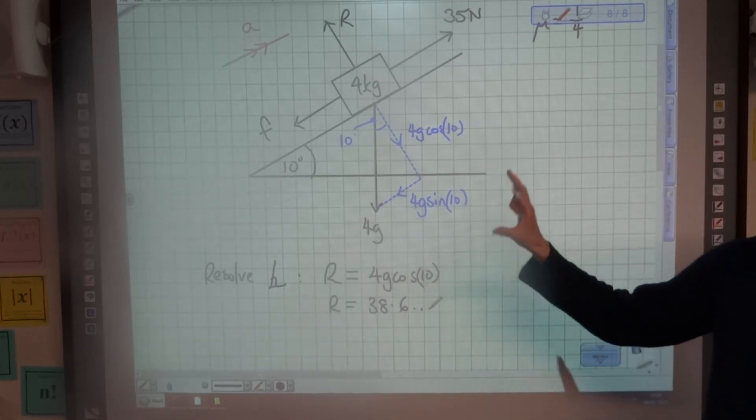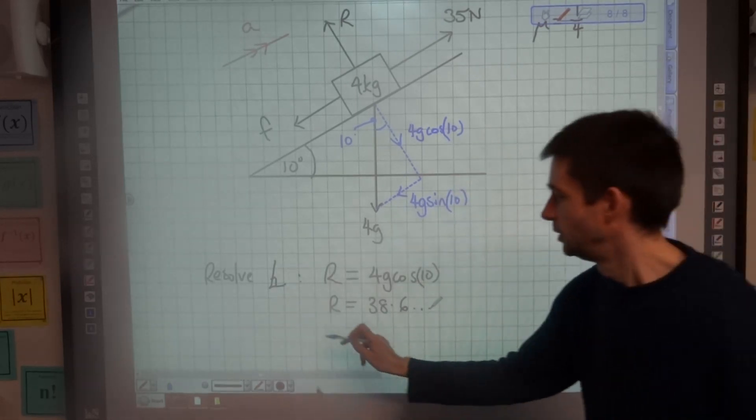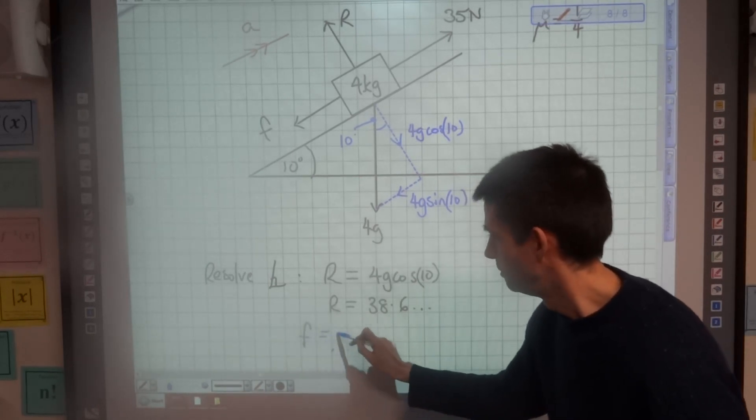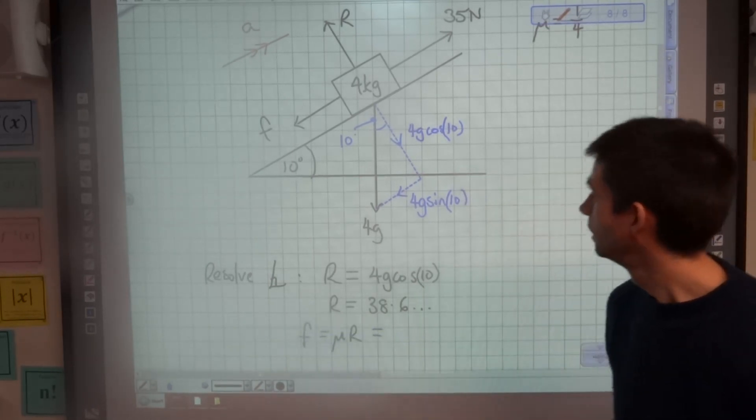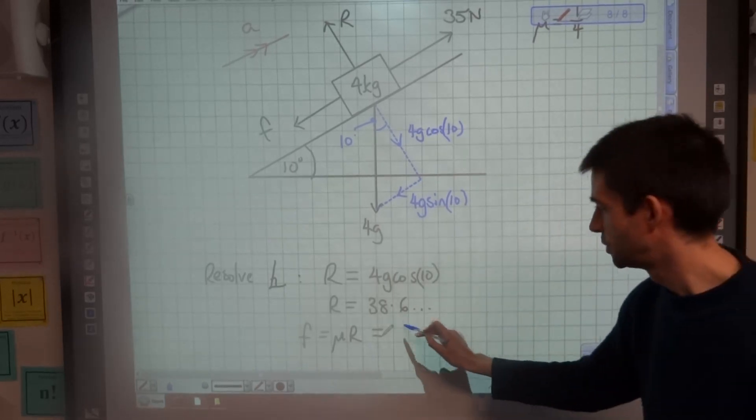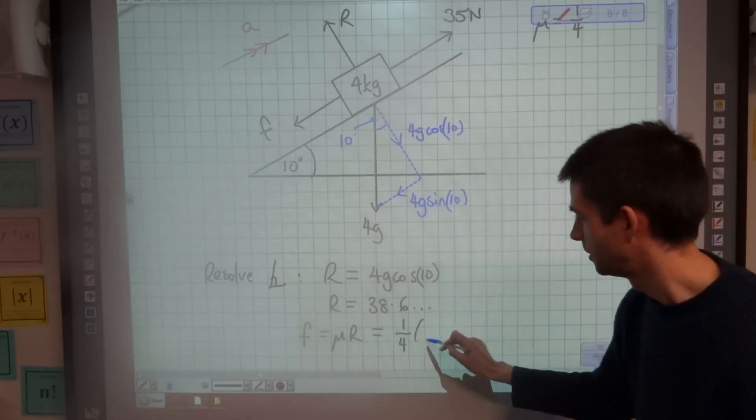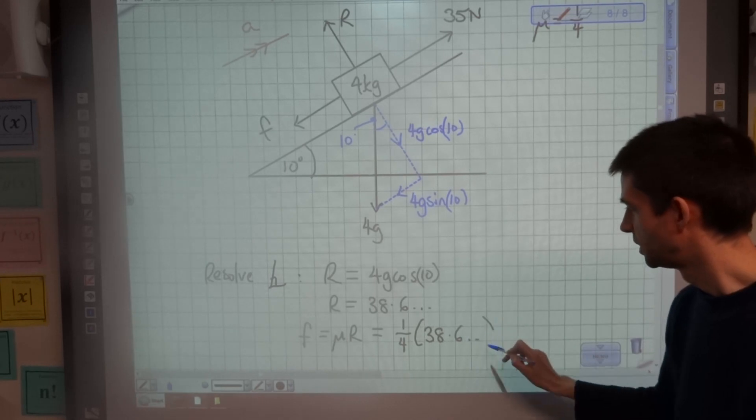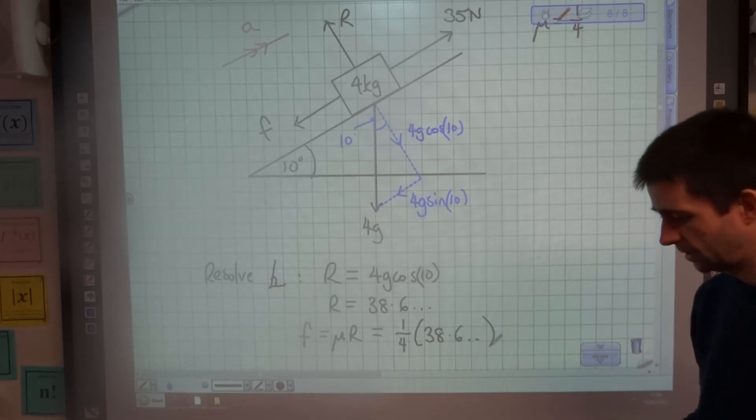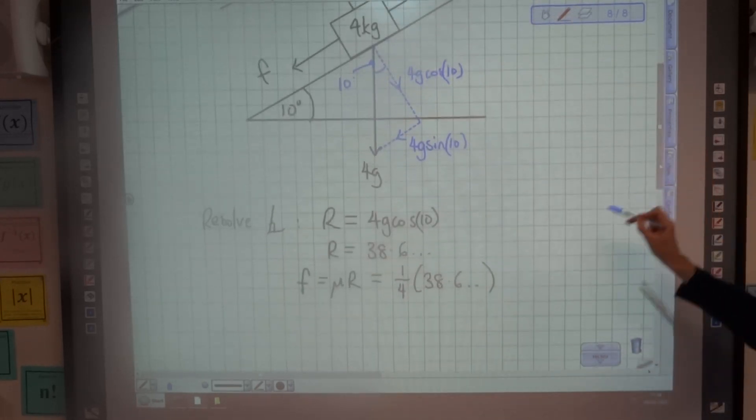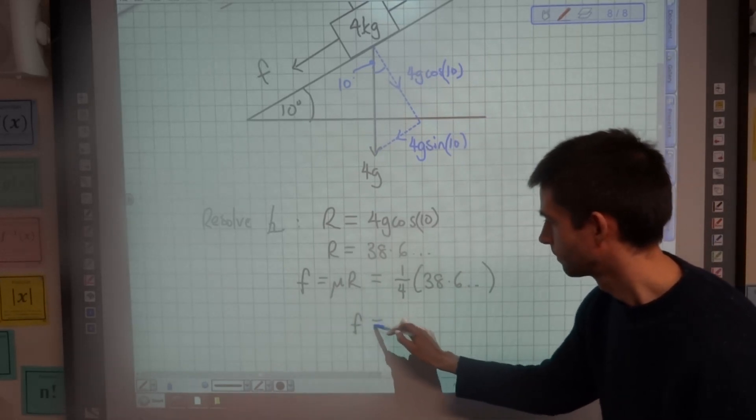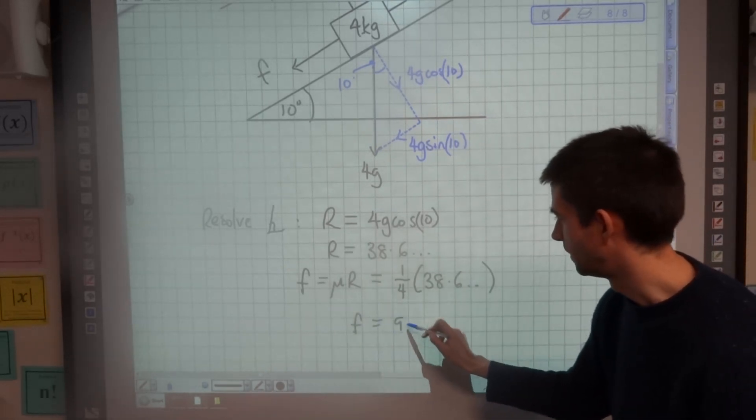And I'm now going to use that to find out the value of friction using the equation F equals mu R. Now I know that mu is one quarter because I was given that in the question. So if I work out one quarter of 38.6, I get the value of friction to be 9.651.